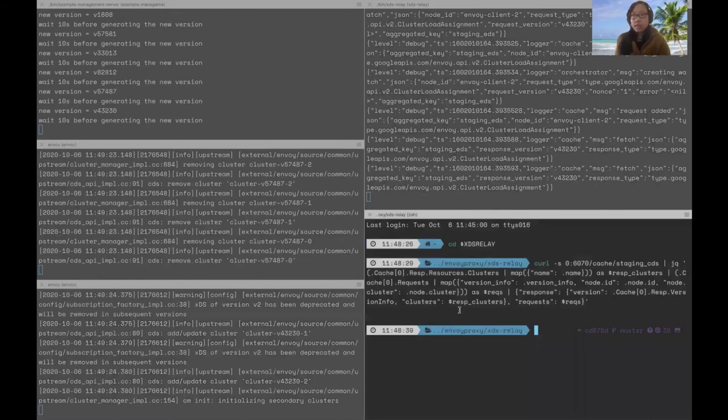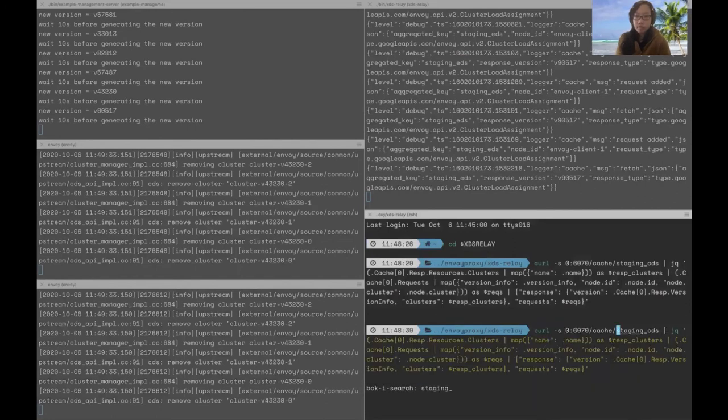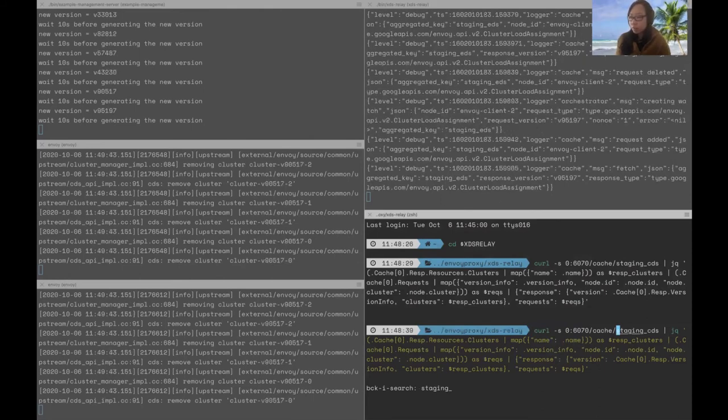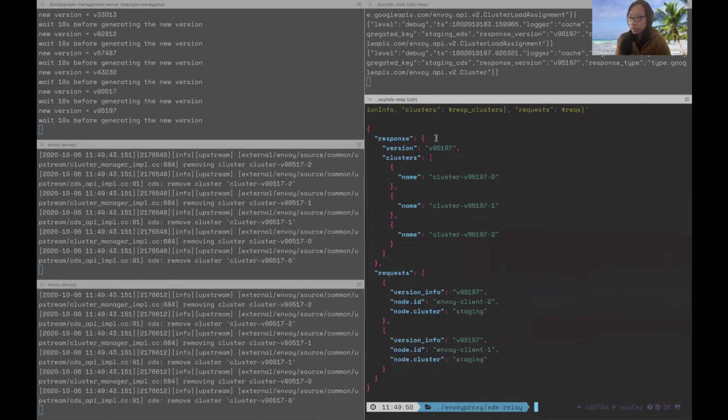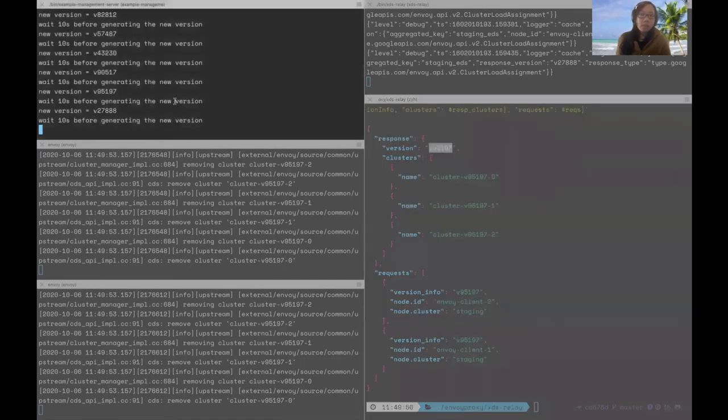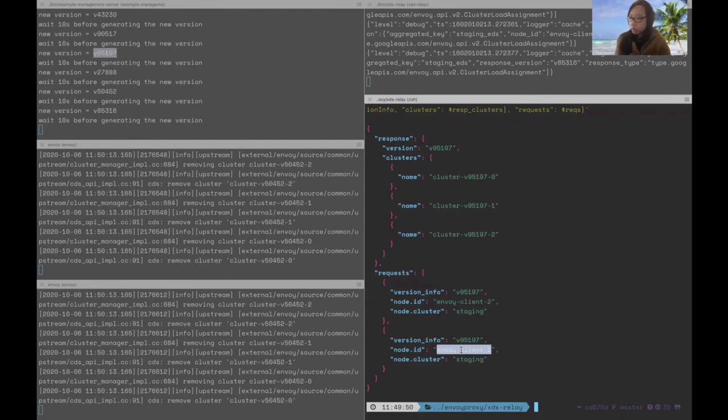Again, some more activity. And now, if we were to run the same curl on our cache endpoint, we'll see something different. So, of note here is that we're using JQ to make the output more concise for this demo. So, as you can see, the response contains the version of the latest snapshot that was generated by the server. In this case, it's 95197 more seconds have passed since I've ran this query. So, that's why we're not seeing the latest. But we can also see that both Envoy clients are cached in the requests. Right? Our Envoy client two and Envoy client one.